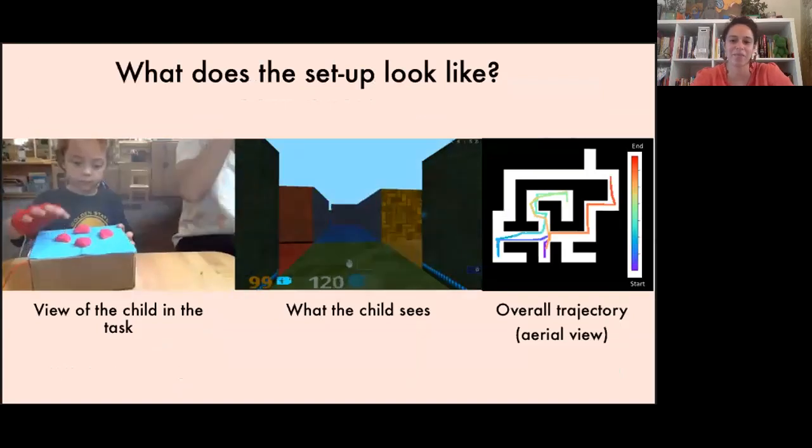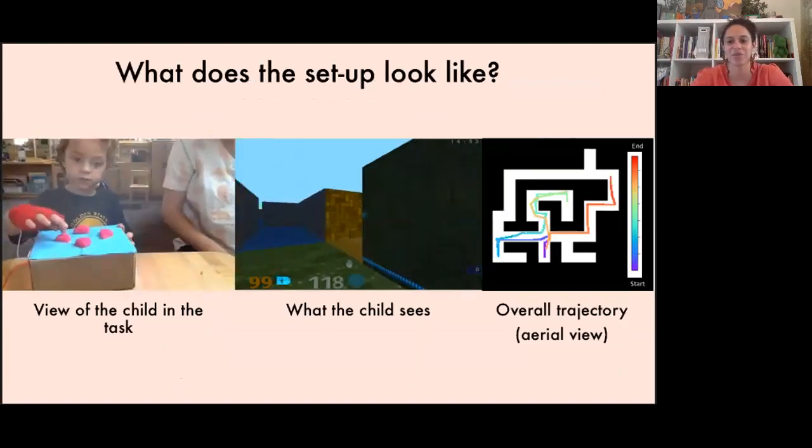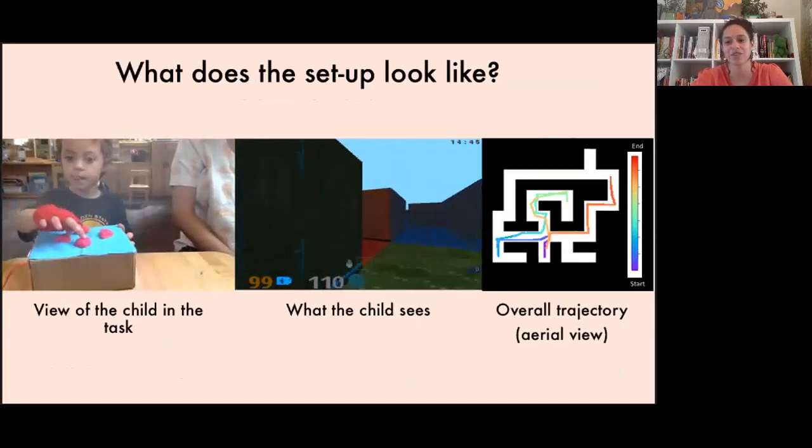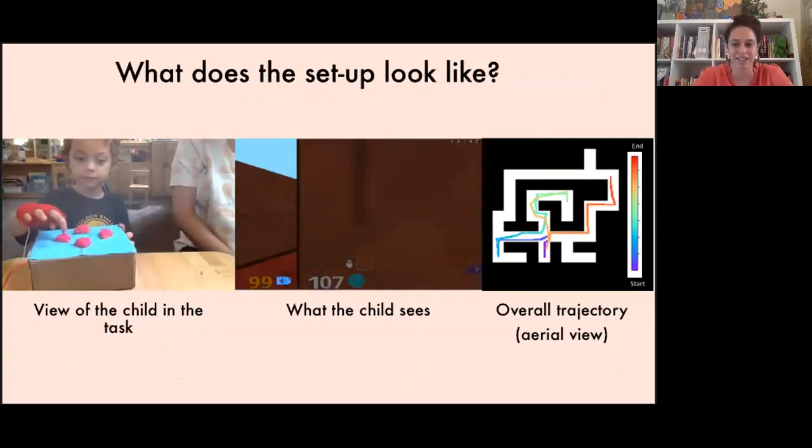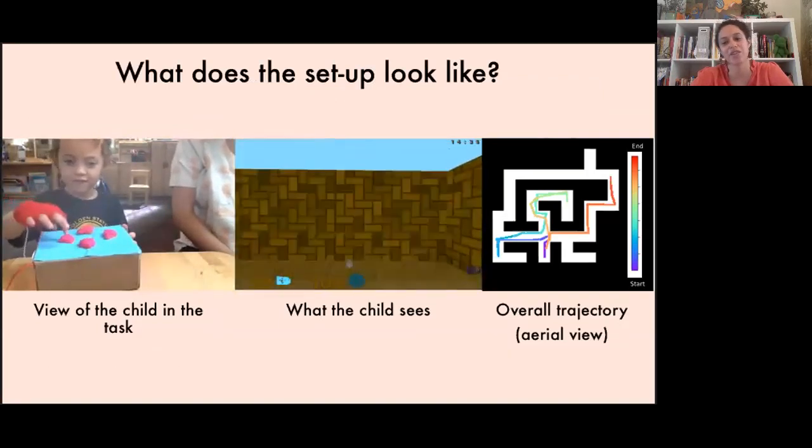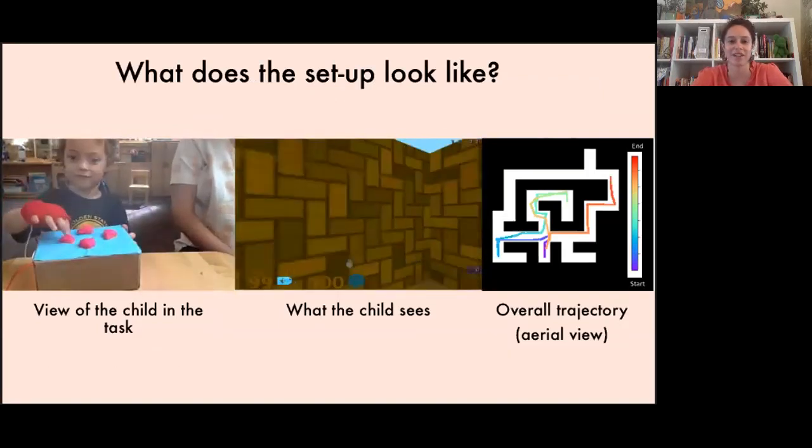Now let's look at our setup. To the very left you can see what it looks like when a child is exploring the maze using the controller and the four possible actions that they can take. In the middle video you can see what the child is seeing while navigating through the maze. And on the right you can see an aerial view of the child's overall trajectory in the maze. Blue representing where they started their exploration and red is where they finished.